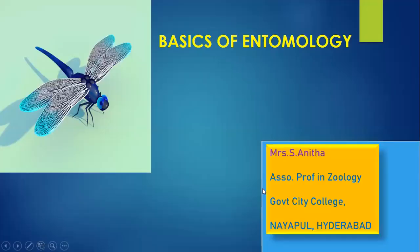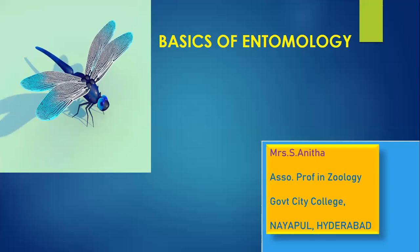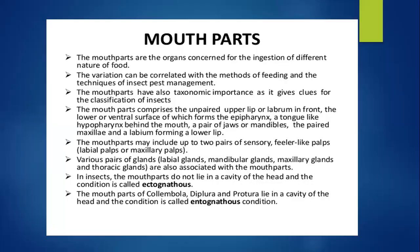Hello students. Today's topic is a continuation of basics of entomology. We will discuss the external morphology of insects, especially the mouthparts and, if possible, the wings of insects. So, mouthparts.